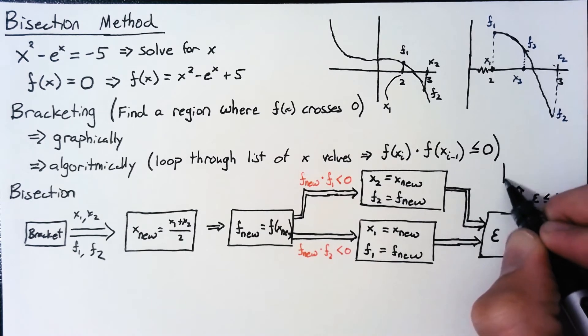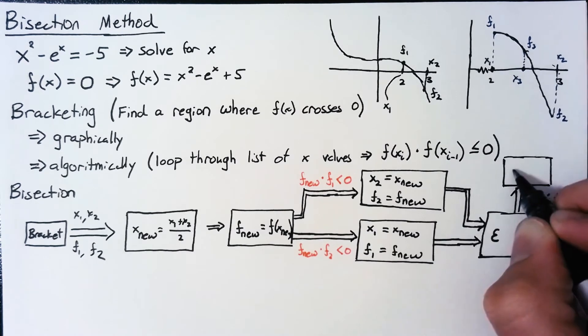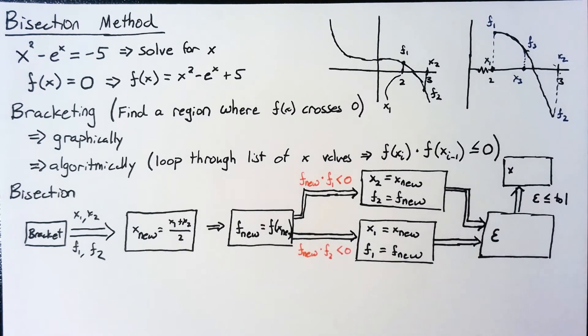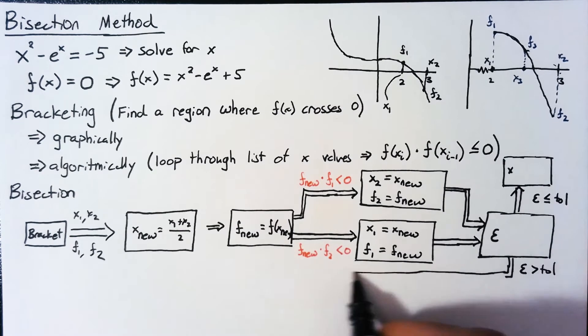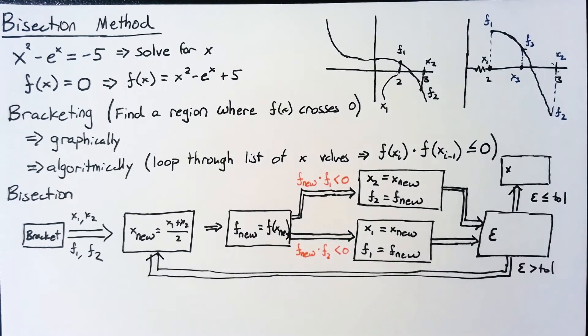But if we are greater than our tolerance, that means that we need to head back to determine another new value. So let's figure out what this epsilon is going to be.